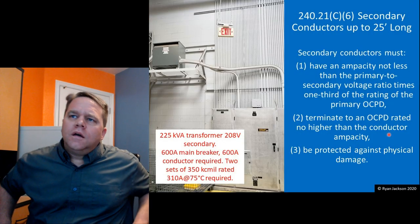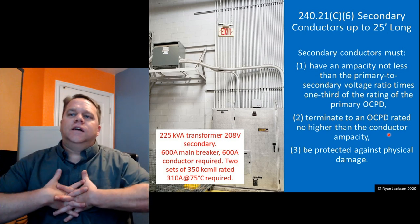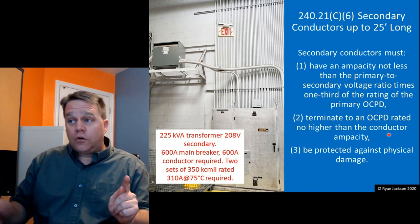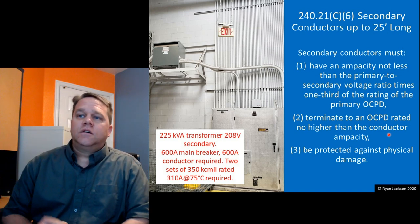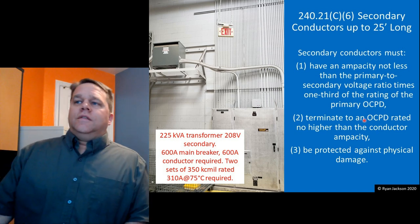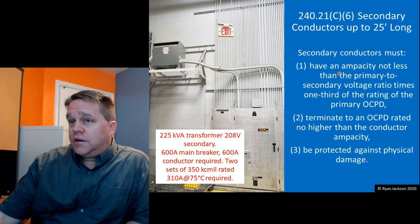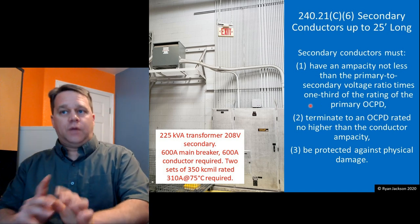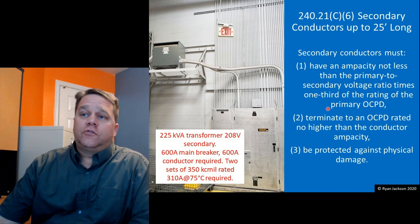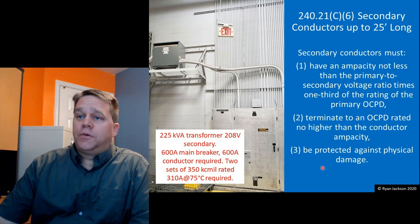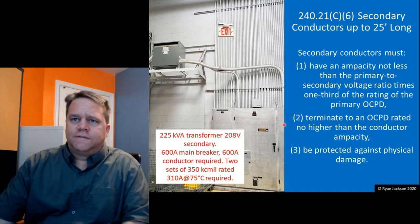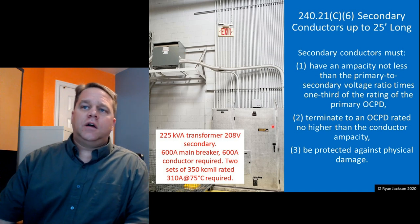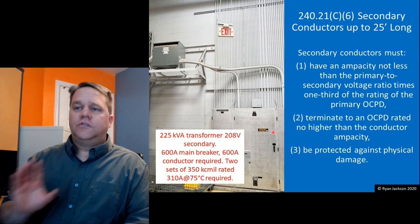The last case is secondary conductors up to 25 feet in length — longer than 10 feet and not outdoors. The rule says the conductors must have an ampacity not less than the primary-to-secondary voltage ratio times one-third the rating of the primary device. They must terminate to an overcurrent device rated no higher than the conductor ampacity, and be protected against physical damage. So the secondary comes out longer than 10 feet but not longer than 25 — you've got to deal with this rule.